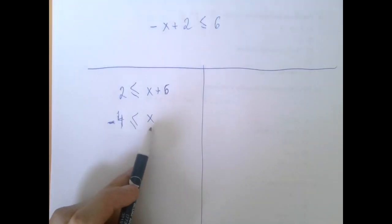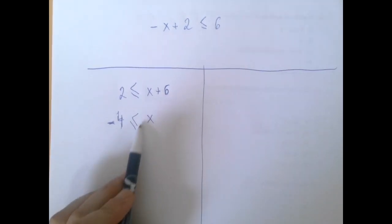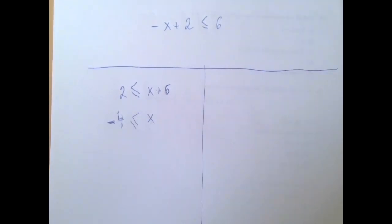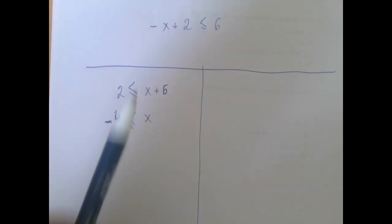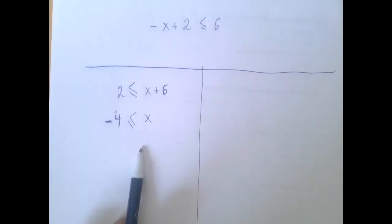One disadvantage is that if X is on the right hand side, you have to be able to look at it from the point of view of the variable. X is now on the bigger part of the inequality sign. So it's greater than or equal to negative 4. Now this is what I would do.